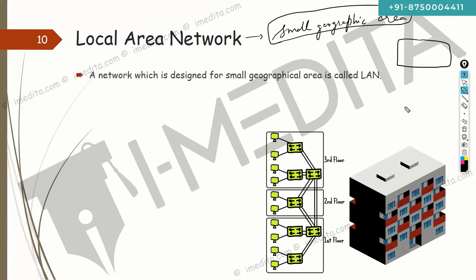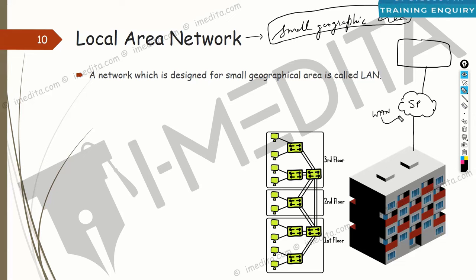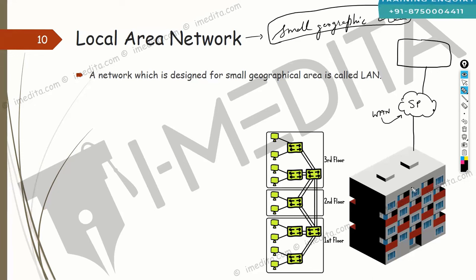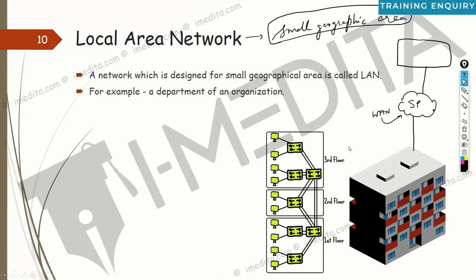When you take a connection from a service provider to connect distant locations, that's where your WAN starts. WAN basically starts where you start taking services from a service provider. You might still have one or even two buildings within a local area network — the boundary isn't just physical size. The internet is one example of a wide area network.